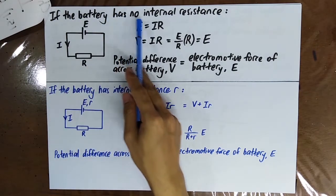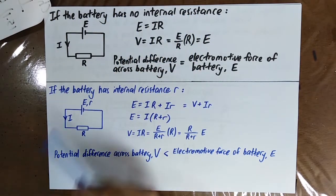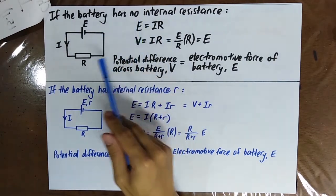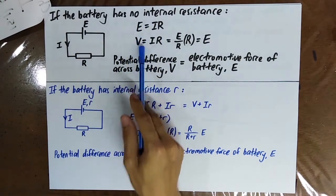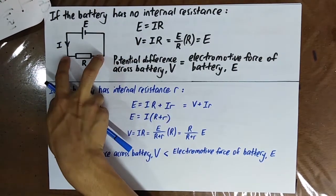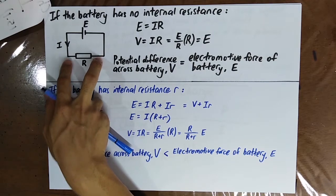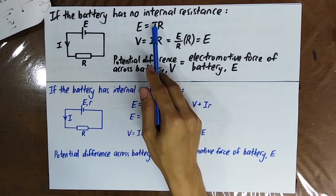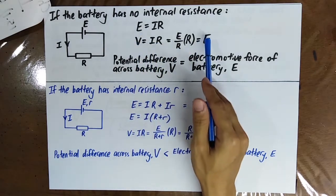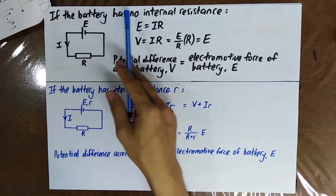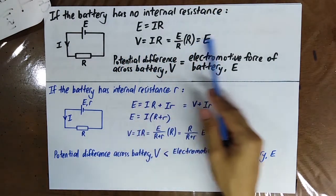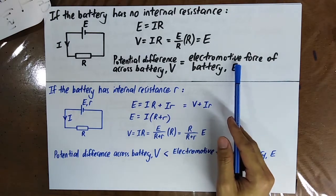If the battery has no internal resistance, therefore E equals IR. E is the electromotive force. The potential difference across the battery, which is also equal to the potential difference across the resistor, is equal to IR. So I equals E over R, and therefore V equals E. When the battery has no internal resistance, the potential difference across the battery equals the electromotive force of the battery.